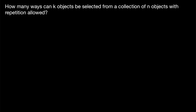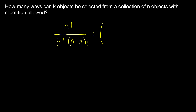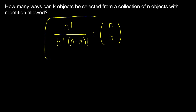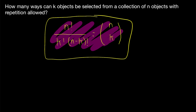Usually, when we begin to count combinations, we do not allow repetition. You may recall that the number of ways k objects can be selected from a collection of n objects is equal to n factorial divided by k factorial times n minus k factorial. That's the number of combinations of k objects selected from a collection of n objects. It's denoted as n choose k and called a binomial coefficient. You should already be familiar with this before tackling today's problem. I'll leave links in the description to lessons about combinations without repetition.